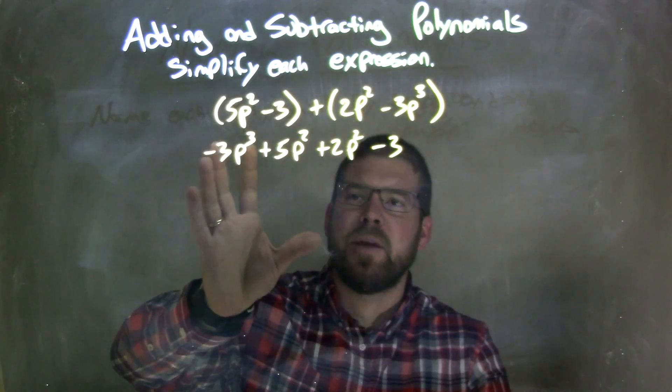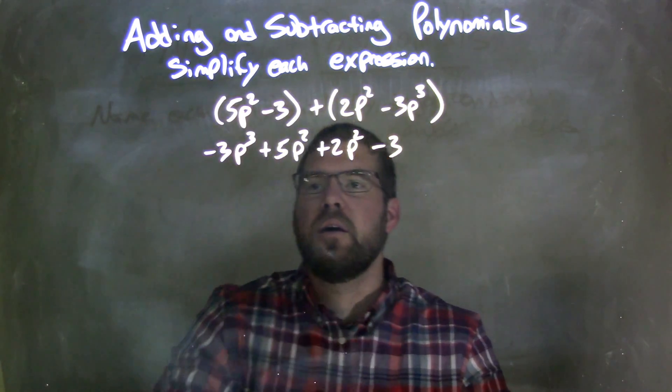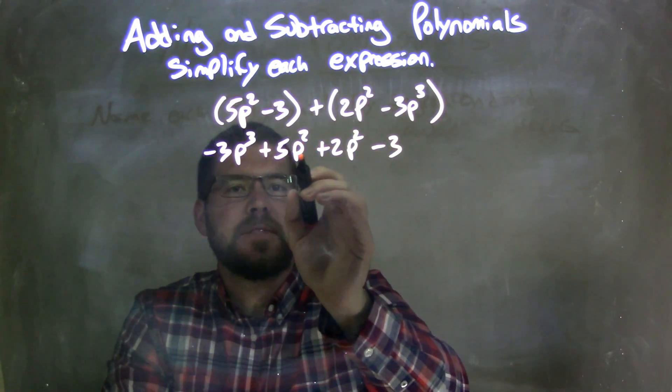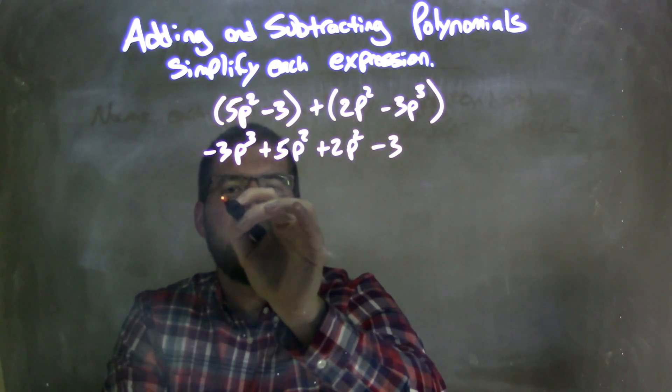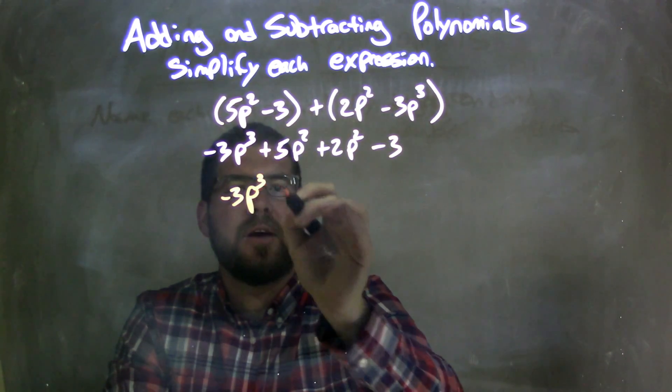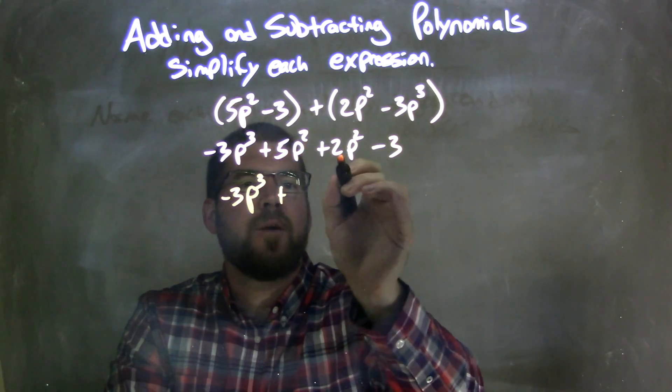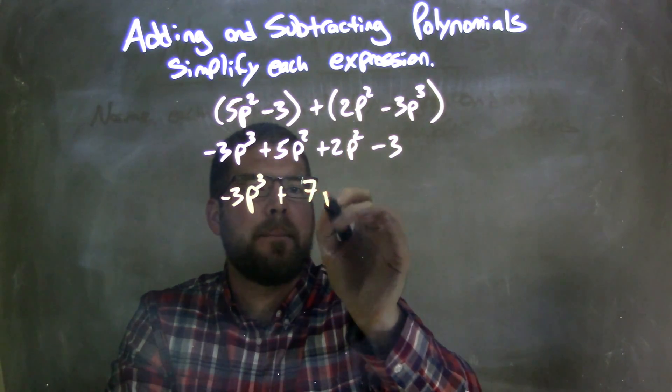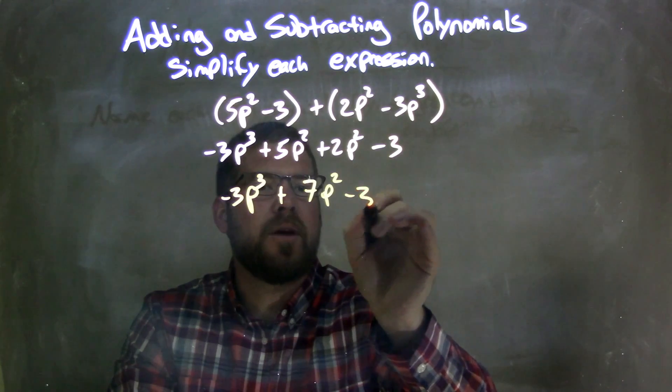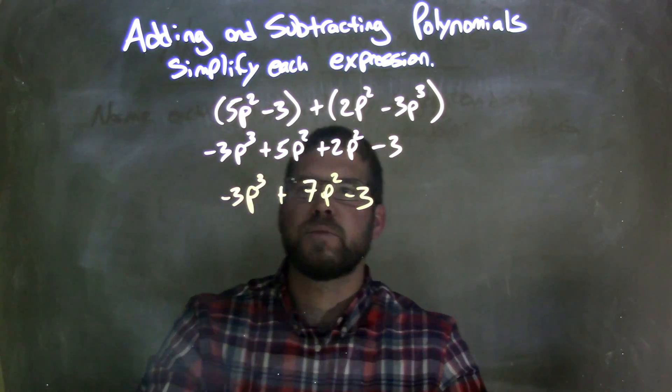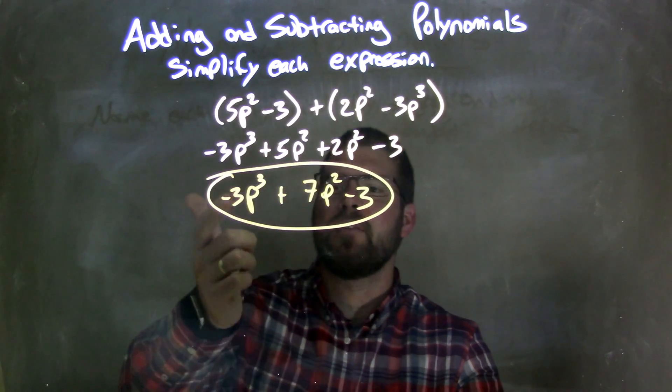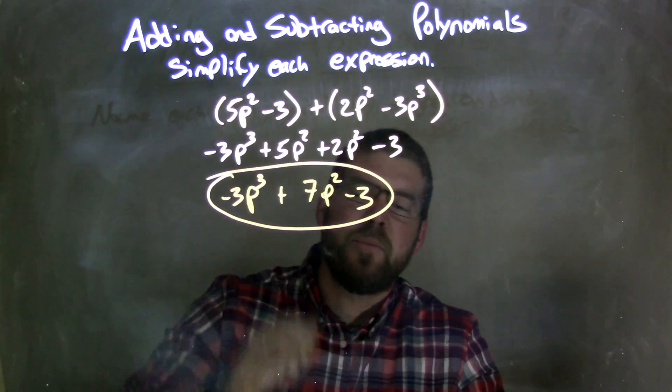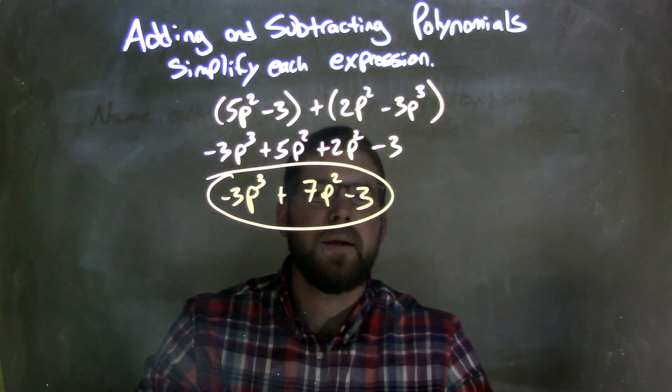Now, the way I combine these, or rearranged it, I have my like terms now are p squared. I can combine them together. There's no p to the third, so I have negative 3p to the third here, plus 5p squared plus 2p squared is 7p squared. And we have a minus 3, and there we have it. We have our expression simplified. Can't be simplified anymore. So we found negative 3p to the third, plus 7p squared, minus 3.